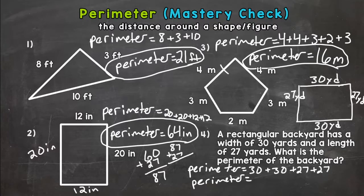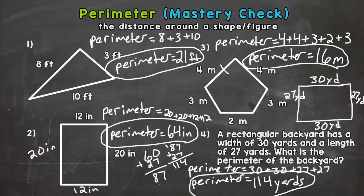So 7 plus 7 is 14, 1 plus 8 is 9, plus another 2 is 11. So we get to 114. Check your unit of measure, it was yards, so you should have had 114 yards for our word problem.